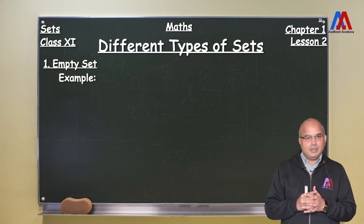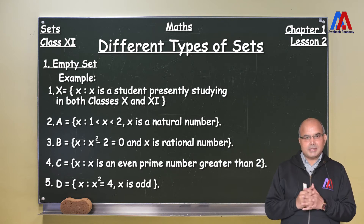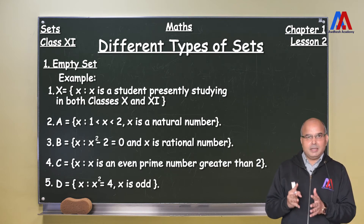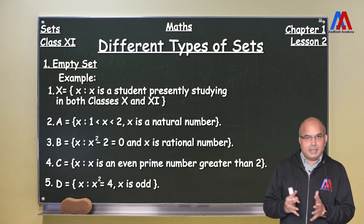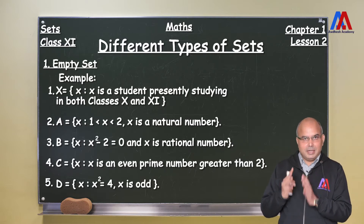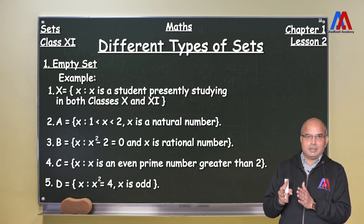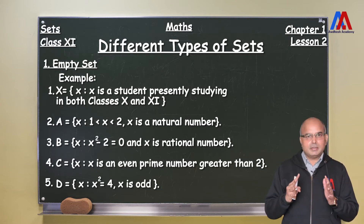For example, if we say x is a set such that x is a student presently studying in both class 10th and class 11th, you can understand that there will be no student who can study in class 11th as well as in class 10th. And therefore, the set is an empty set.